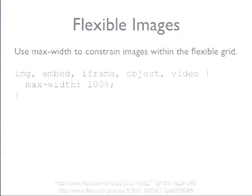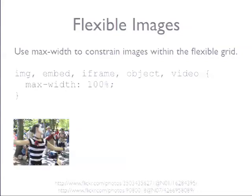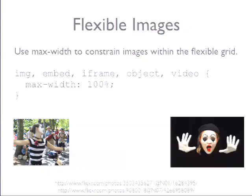Flexible images are actually even easier than flexible grids. As far as I know, this is the only thing you need — this exact rule in your stylesheet — and you have flexible media. We've got image, iFrame, object, video, the HTML5 tag — and you just set max-width to be 100%. What that means is: if we've got an image that's smaller than its container, it'll just be the natural width, because max-width says it can't be any bigger than its container. And for images that are bigger than their container, they get trapped inside their container — they'll be scaled down to fit.